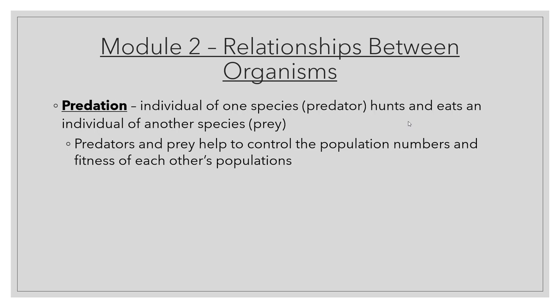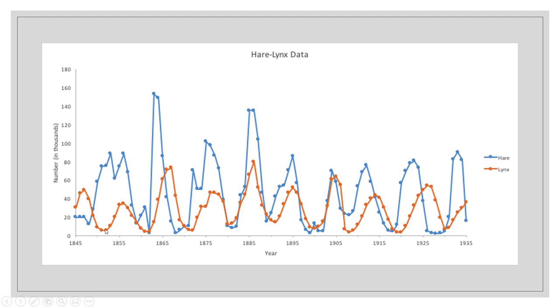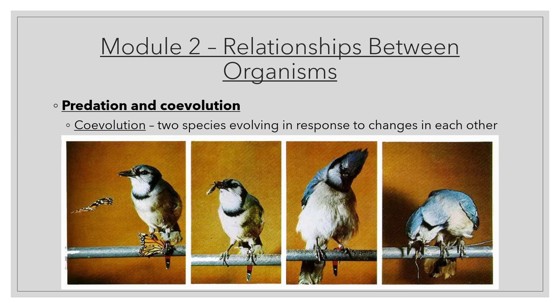The next relationship is predation, which involves one species — the predator — hunting and eating another — the prey. While that's not good for the individual prey, this relationship is actually good for both populations because they help control each other's numbers. Looking at the hare and lynx graph: when the bunny population goes up, the lynx population goes up; then because there are many predators, the bunny population goes down, and the lynx population follows. Without predators, prey would reproduce until everyone starved from lack of resources.